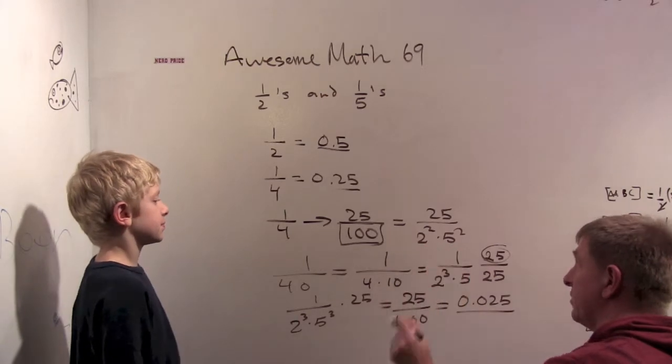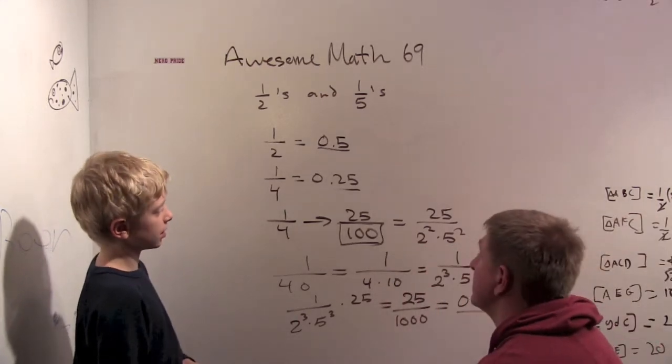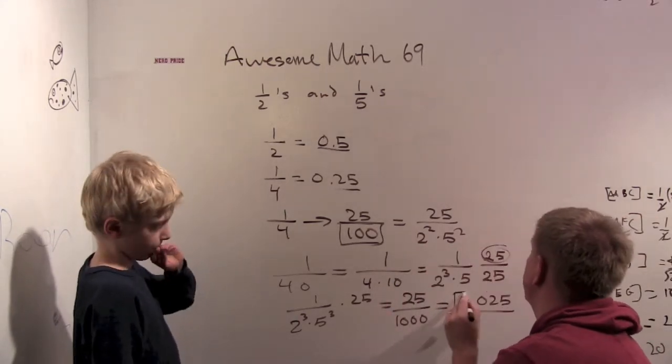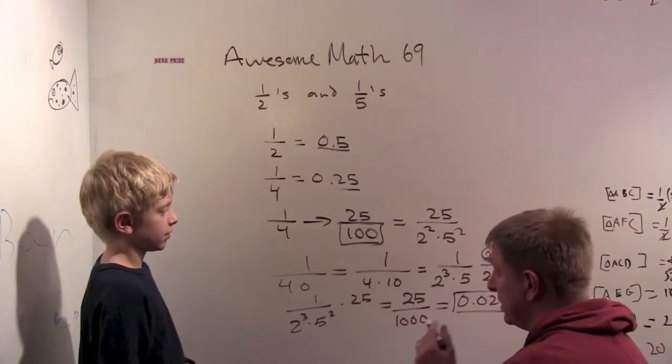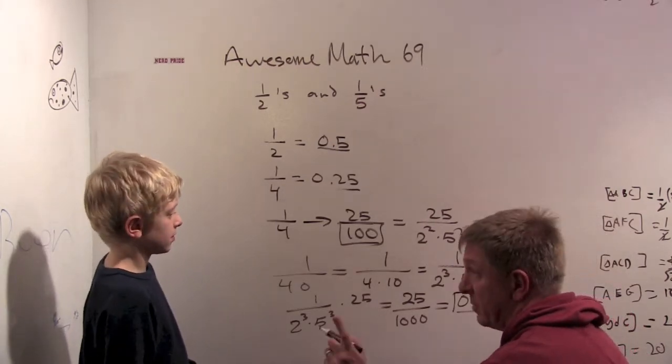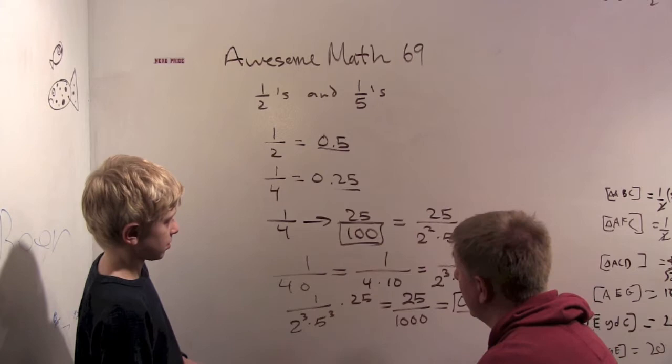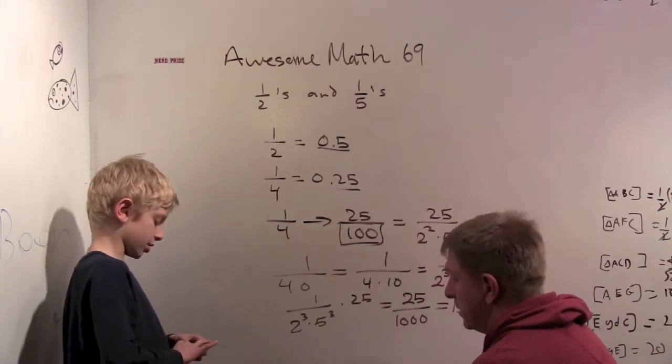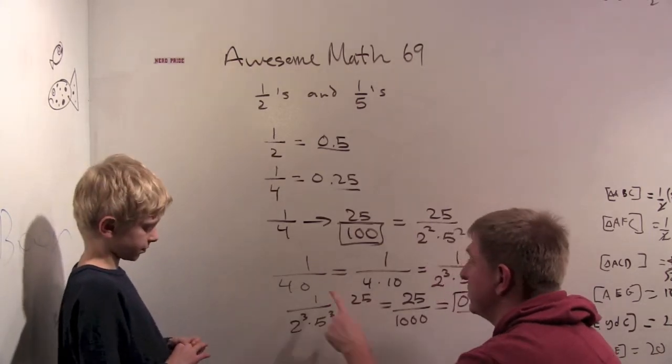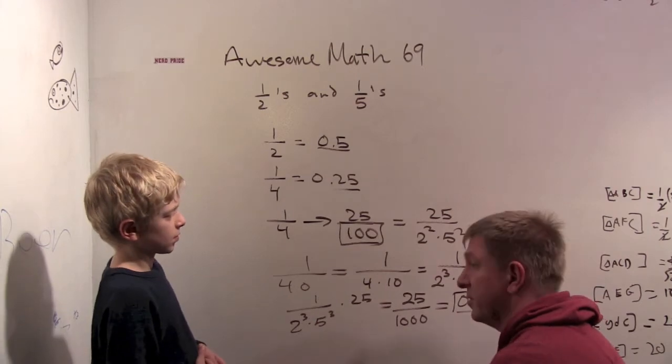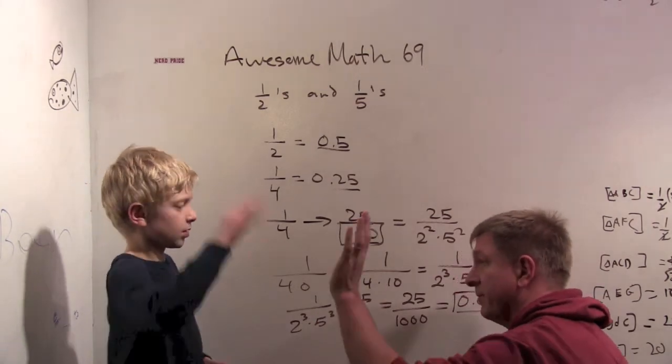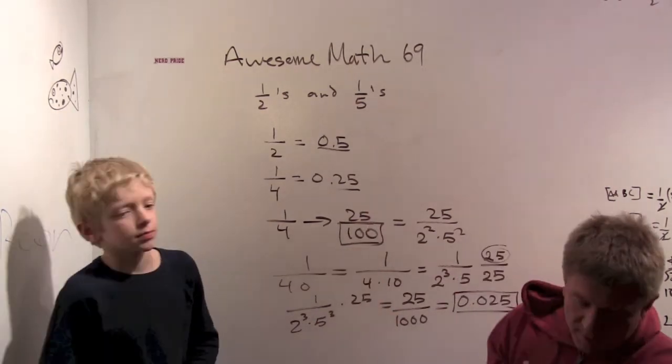So this idea of getting the same number of twos and fives on the bottom leads us to finding really easy decimal representations for some numbers. Not all numbers, just some. When you only have twos and fives, you get pretty good representations. Alright, that's tough, but we'll get there.